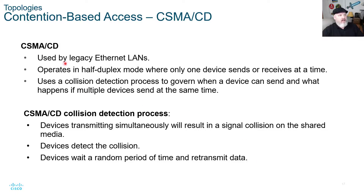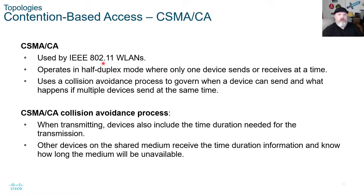CSMA/CD, used by legacy Ethernet LANs, operates in half duplex mode and uses collision detection. When devices transmit simultaneously, a single collision occurs on the shared medium; devices detect the collision, wait a random period of time, and then retransmit. CSMA/CA, used by IEEE 802.11 WLANs, also operates in half duplex, and its collision avoidance process includes the time duration needed for the transmission so other devices know how long the medium will be unavailable.